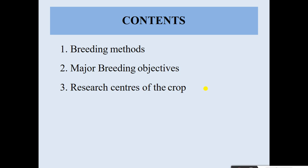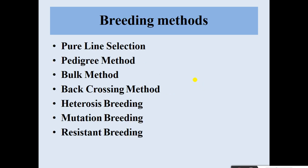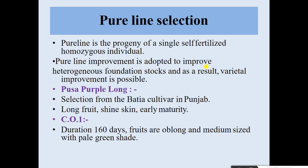The breeding methods are: first, pure line selection; second, pedigree method; third, bulk method; fourth, back crossing method; fifth, heterosis breeding; sixth, mutation breeding; seventh, resistance breeding. These are the breeding methods for development of brinjal varieties.